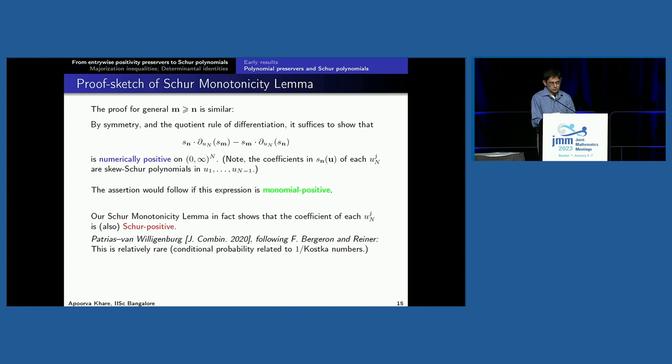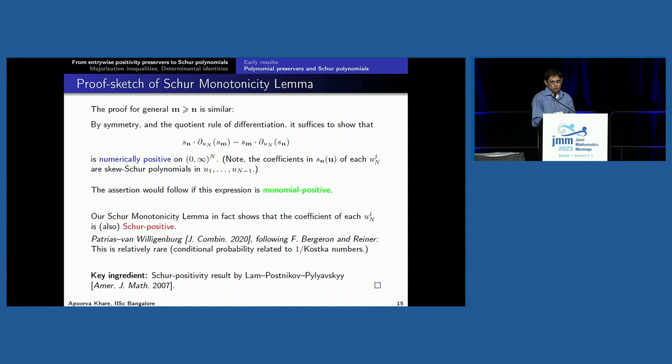There's a result of Vicky Petraeus and Stephanie van Willigenberg that shows that if I have a generic monomial-positive expression, the proportion of those that are actually Schur positive is actually quite low — some Kostka numbers show up in this exact computation. So being Schur positive given monomial positivity is something special or rare, and this is one such instance. How does one actually show this expression is Schur positive in each degree? This requires a big hammer — a Schur positivity result by Thomas Lam, Alex Postnikov, and Pasha Pylyavskyy — and we use that to prove Schur positivity and therefore numerical positivity.